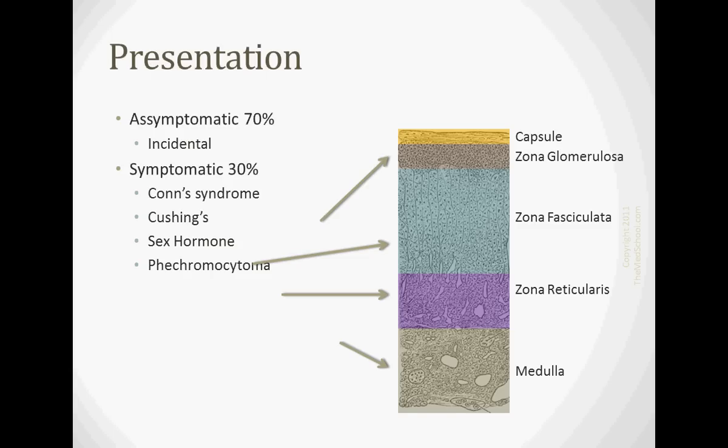Conn syndrome is going to be an aldosteronoma, so a tumor of the zone of glomerulosa where you're going to be producing a lot of aldosterone. And of course, if you're producing a lot of aldosterone, you're going to be retaining your sodium and causing hypertension.